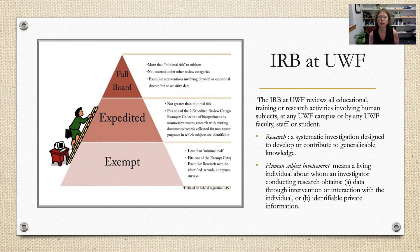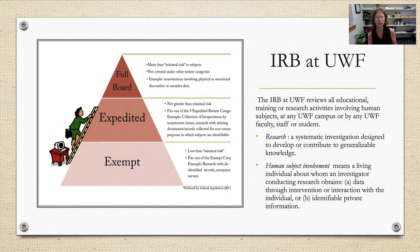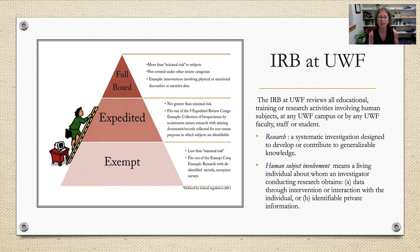The IRB at UWF is a committee of subject matter experts from different departments, and also has a member from the community, that reviews any proposals for research. They review all educational, training, or research activities involving human subjects at any UWF campus or by any faculty, staff, or student. They typically have three levels of review. An exempt review covers minimal risk or less than minimal risk — for example, looking at already-collected data like from the National Center for Education Statistics, where you're not engaging with people at all. That would be an exempt category.